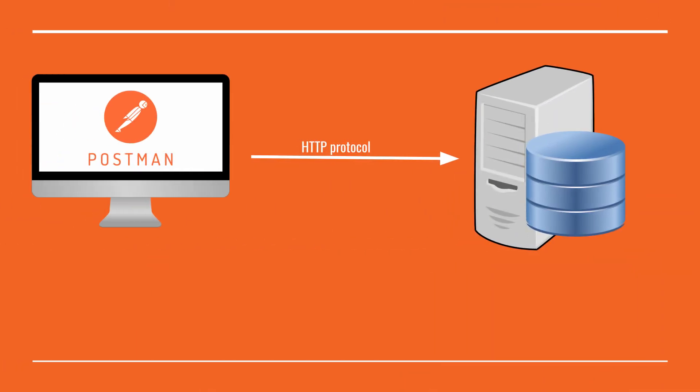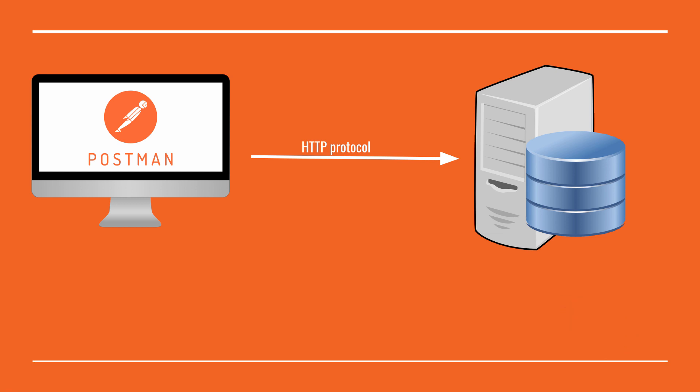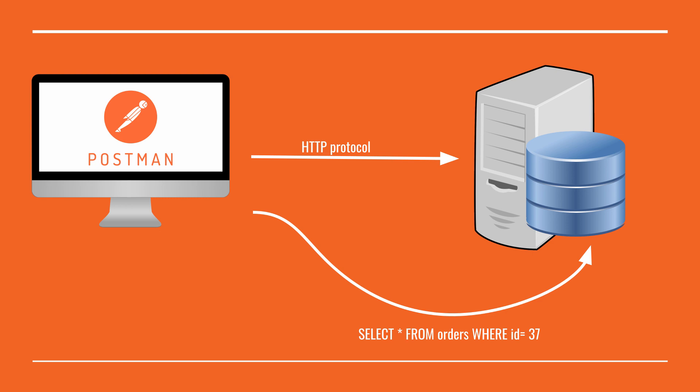Usually how Postman works is that it uses HTTP to connect to different APIs and to send and retrieve data. In our scenario, we want to use the same API as before, but at the same time we want Postman to go sort of behind the scenes in the database and read some values so that we can write tests and make assertions. As I mentioned, this is not possible — Postman cannot connect directly to the database because it can only make HTTP connections.